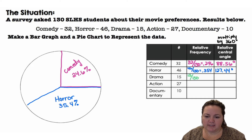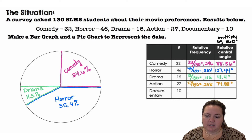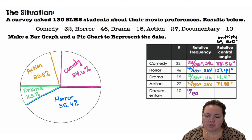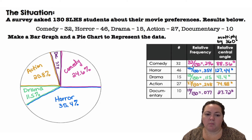Drama is 15 out of 130 — 11.5 percent — and that would be a 41.4 degree angle. Action is 27 out of 130, which is 20.8 percent, so it's going to be less than our comedy section — 74.88 degrees. Our last section is documentary, which is kind of what we're left with: 10 out of 130 is 0.077, or 7.7 percent, and 27.72 degrees. I'll label that section there.